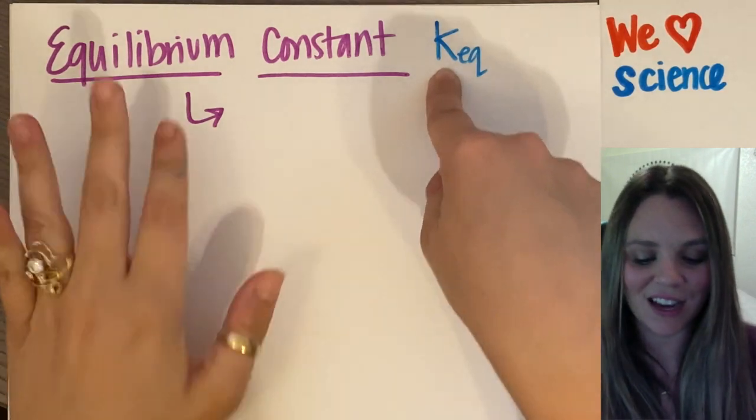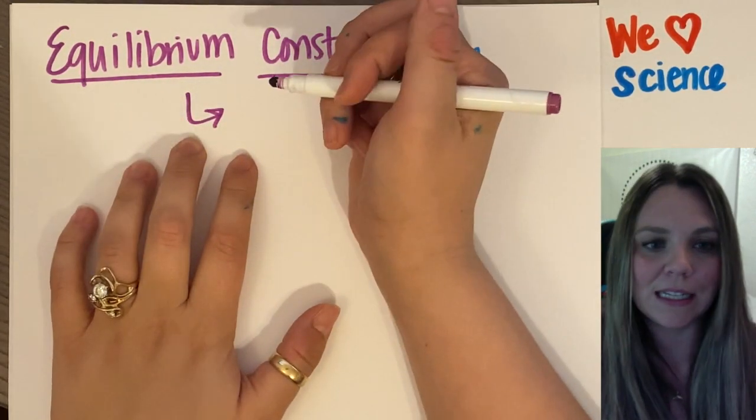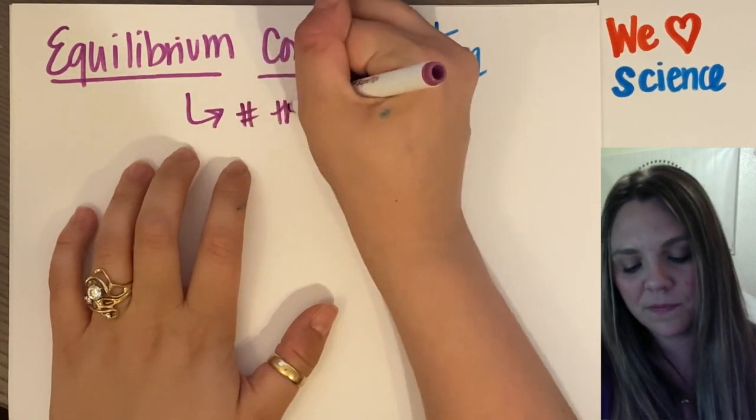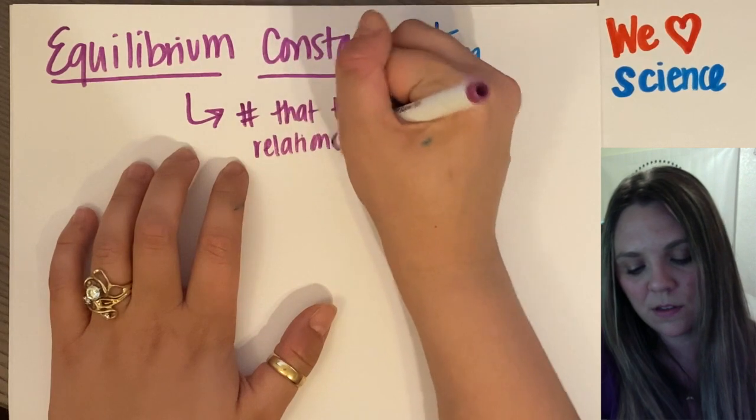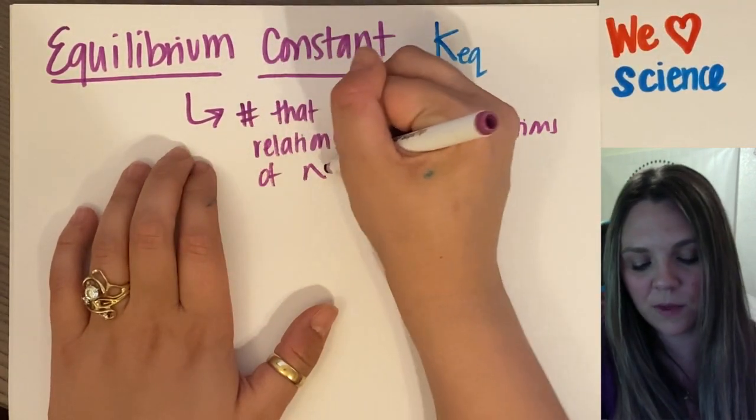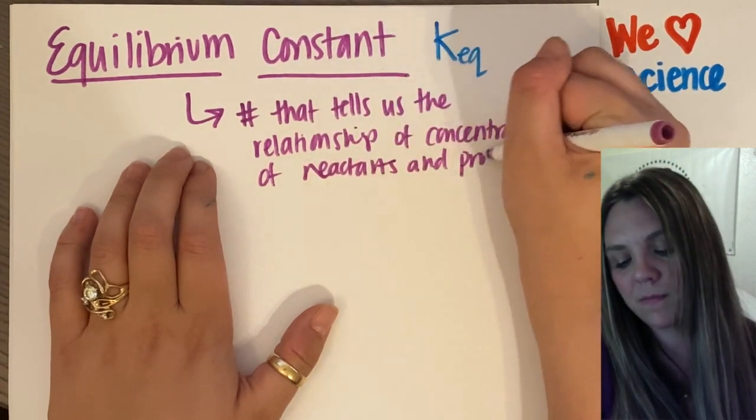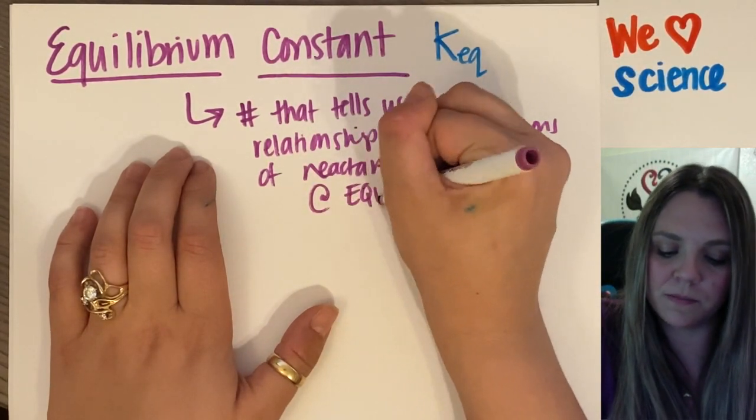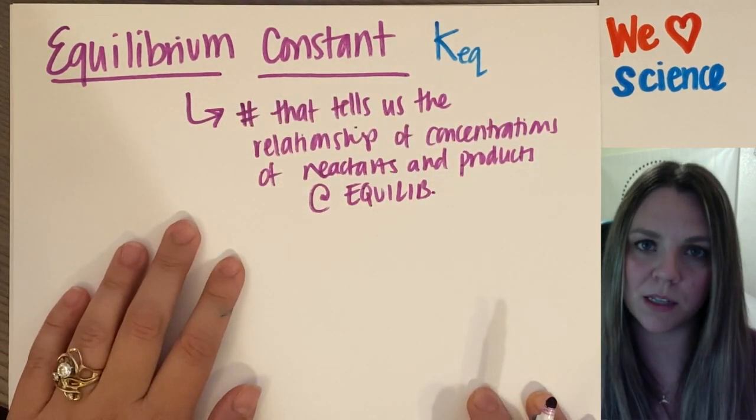But what this is, what the equilibrium constant is, it is a number that tells us the relationship of the concentration of the reactant at equilibrium. This is what the equilibrium constant is.